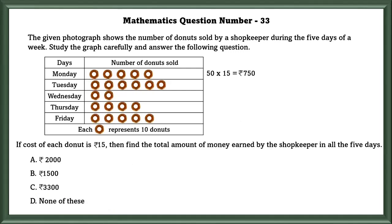Second question. If the cost of each doughnut is 15 rupees, then find the total amount of money earned by the shopkeeper in all 5 days. One doughnut is equal to 15 rupees. We're going to calculate how many doughnuts each day and then multiply it by 15. We have to add to find the total amount of money earned by him in all 5 days. If we add, we will get 3300.